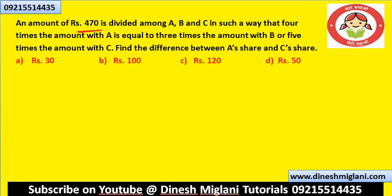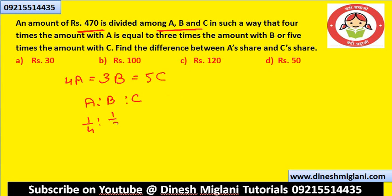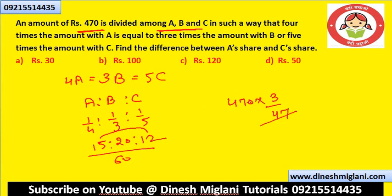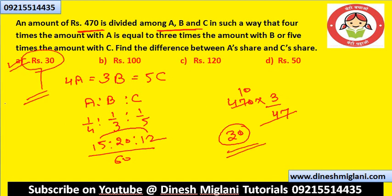An amount of 470 is divided among A, B, C such that 4 times A equals 3 times B equals 5 times C. So A:B:C = 1/4 : 1/3 : 1/5. With LCM 60, this gives 15:20:12. The difference between A and C is 3 parts. So 470 × 3/47 = 30. The difference between A and C is 30.